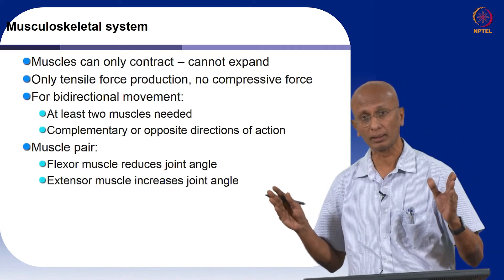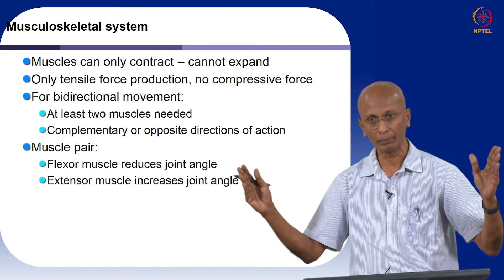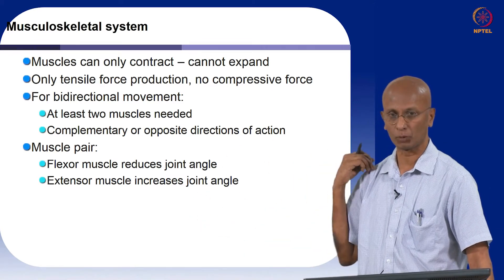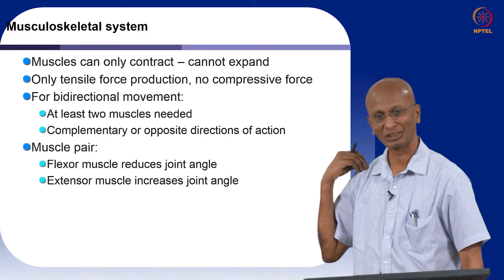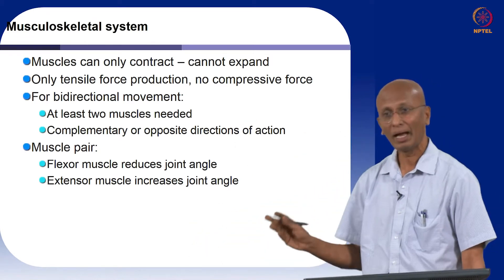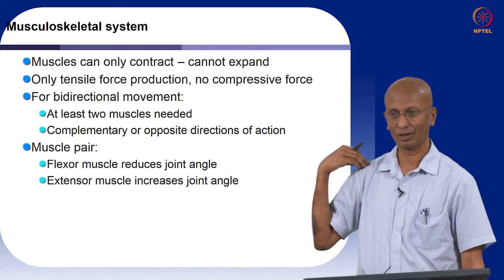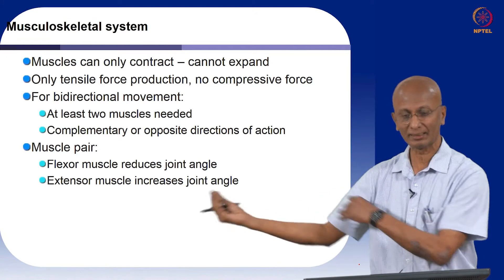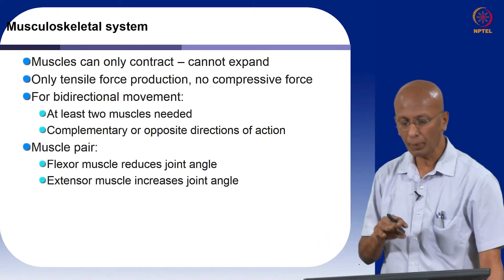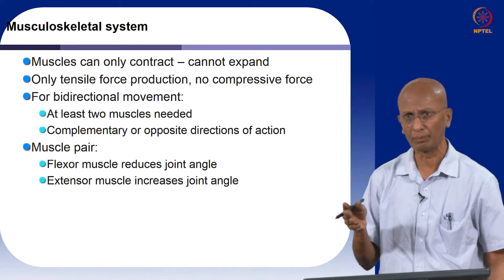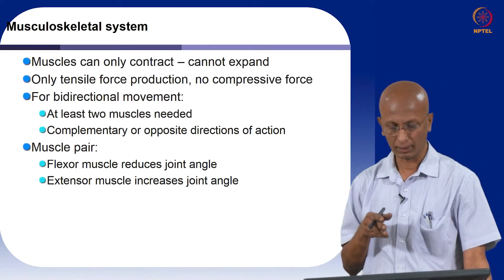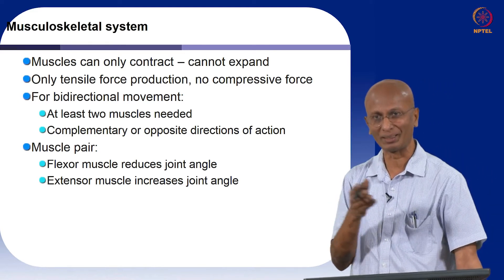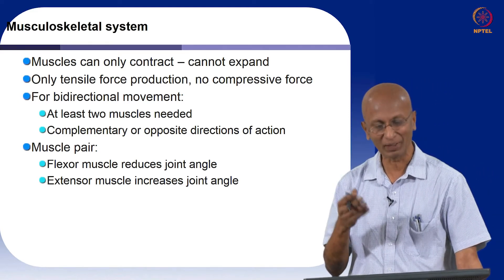Because muscles are only capable of moving in one direction — only shortening, only producing tension — we need to have at least two muscles to be able to move a joint in both directions. If I should be able to move my joint in the clockwise direction and in the anticlockwise direction, I need at least two muscles: one that produces flexion or reduction in the angle of my joint, and another muscle that does the extension or increase in the angle. This complementary or opposite directions of action exists in many engineering systems as well — you can draw parallels between complementary action in a muscle pair and complementary action in certain kinds of amplifiers in electronics.